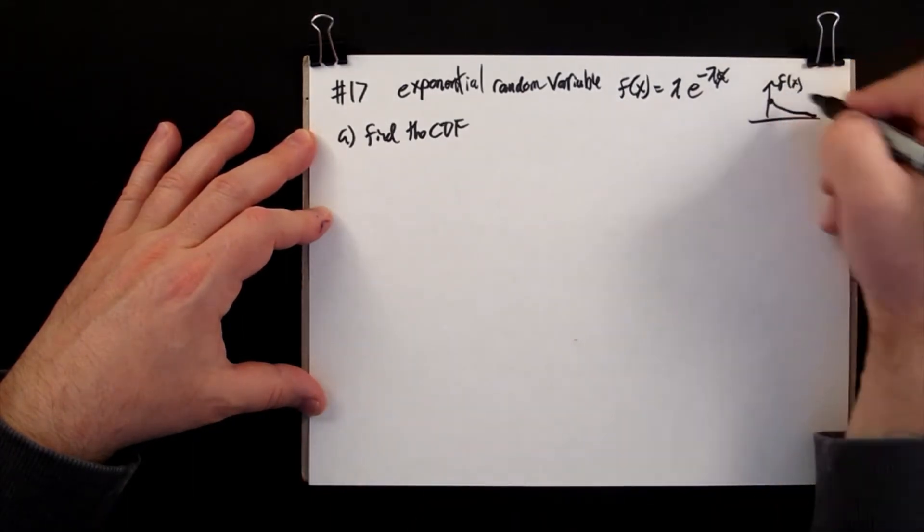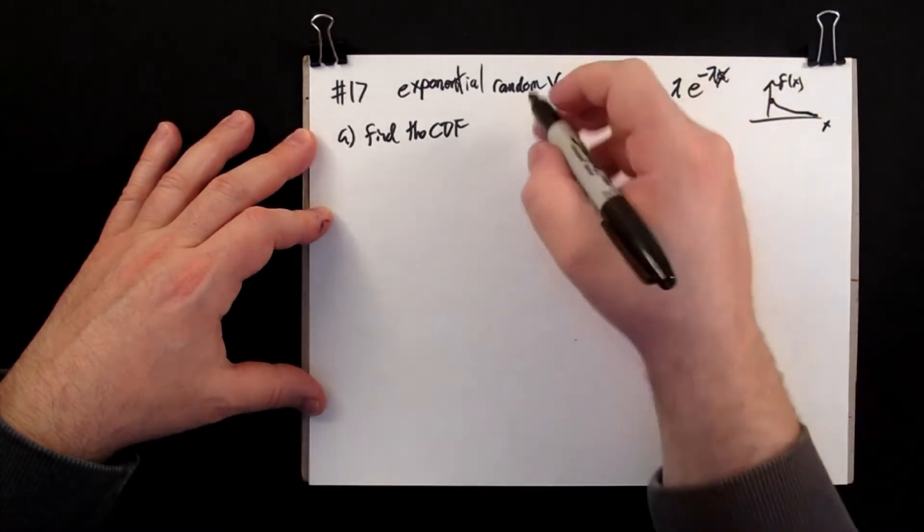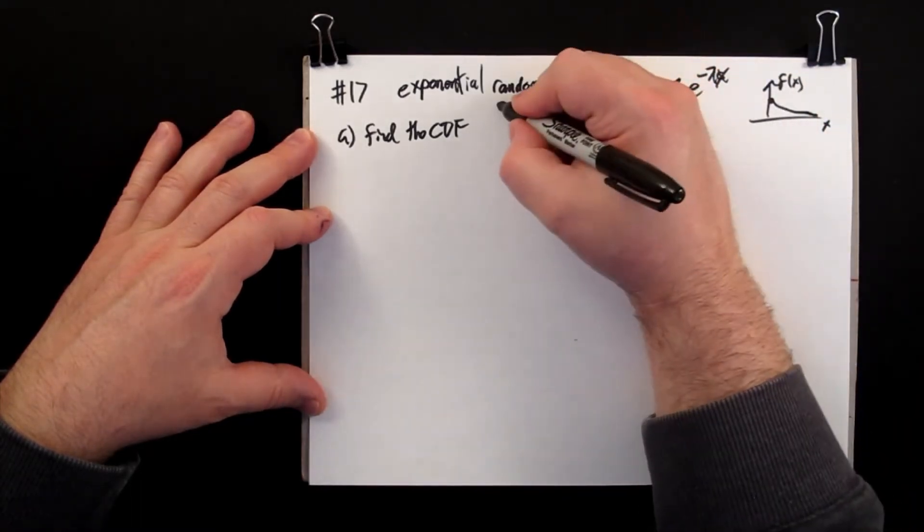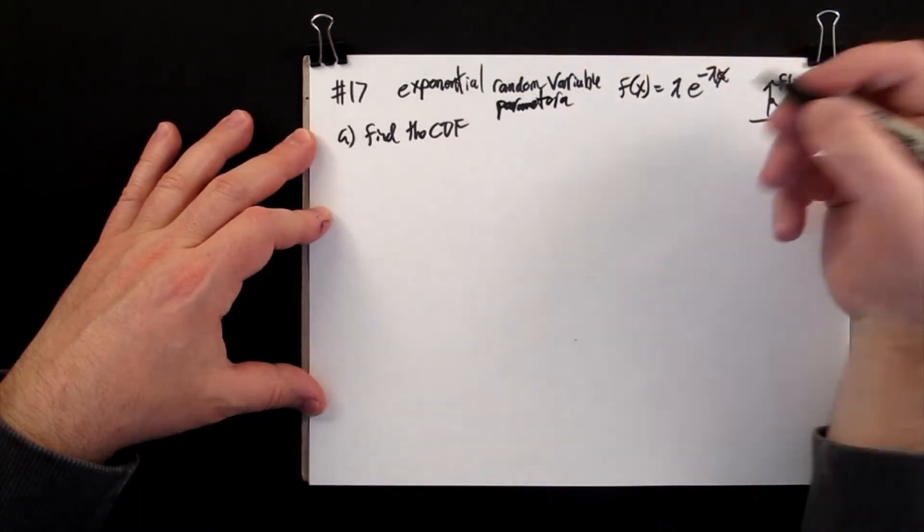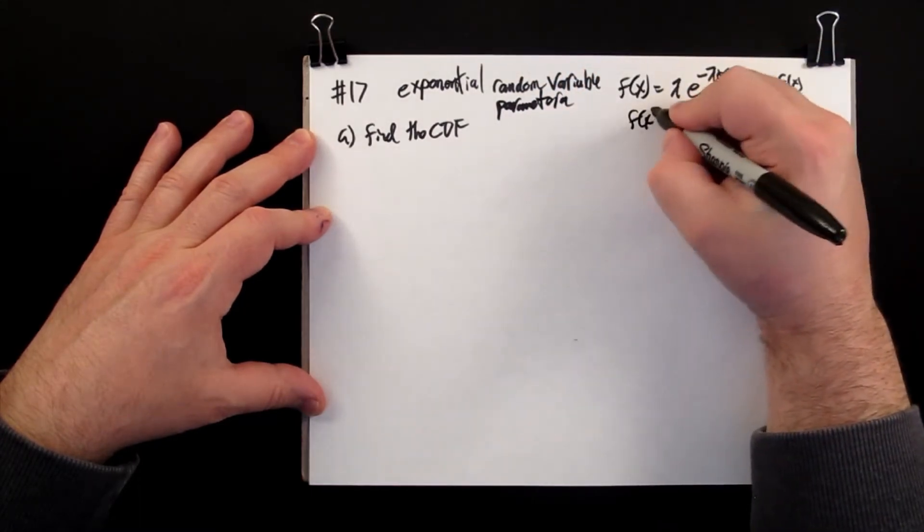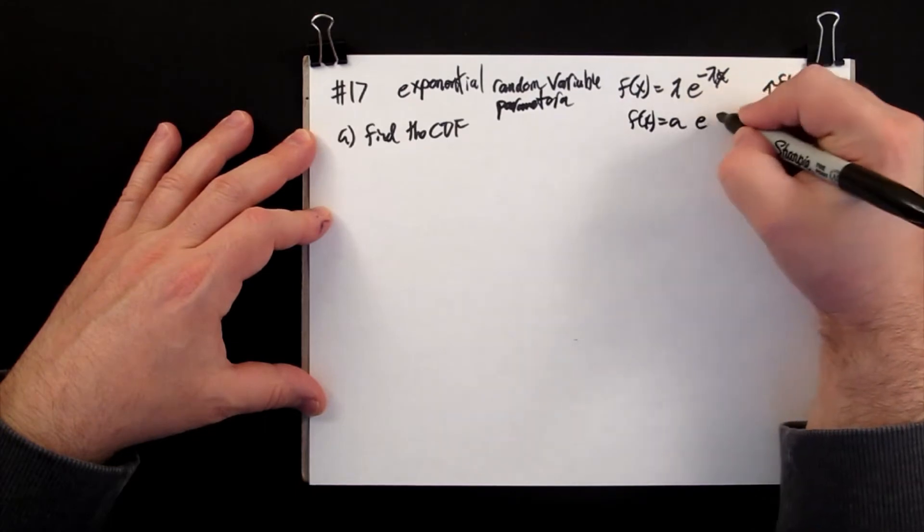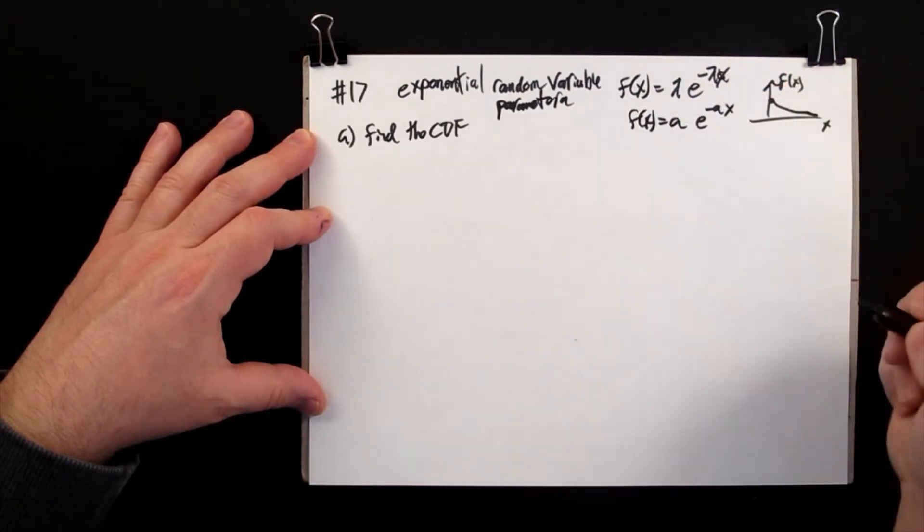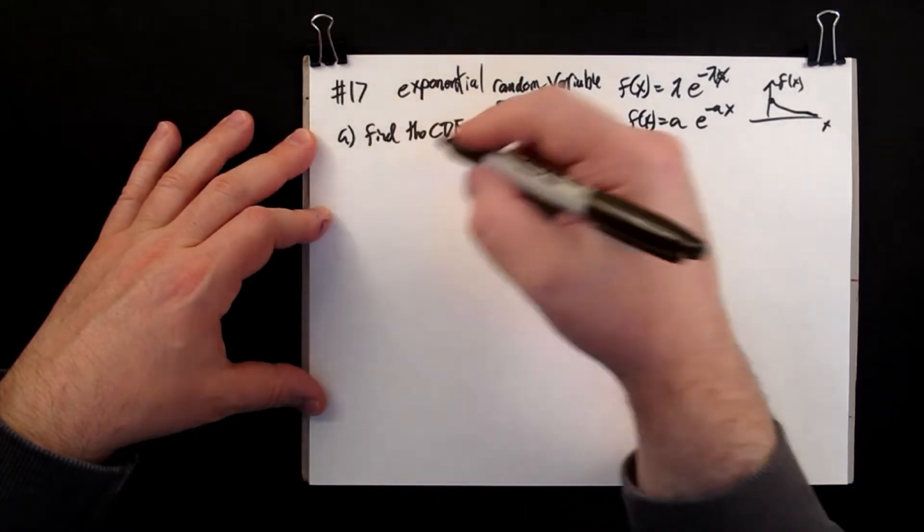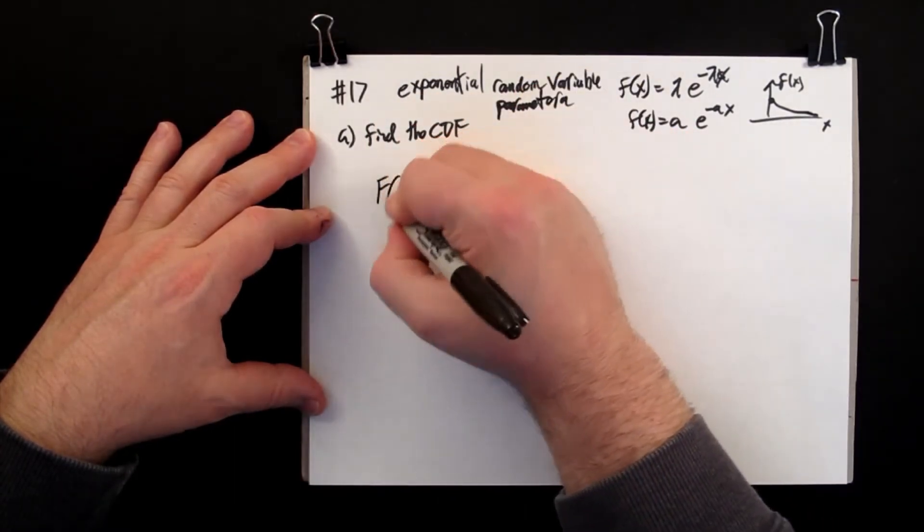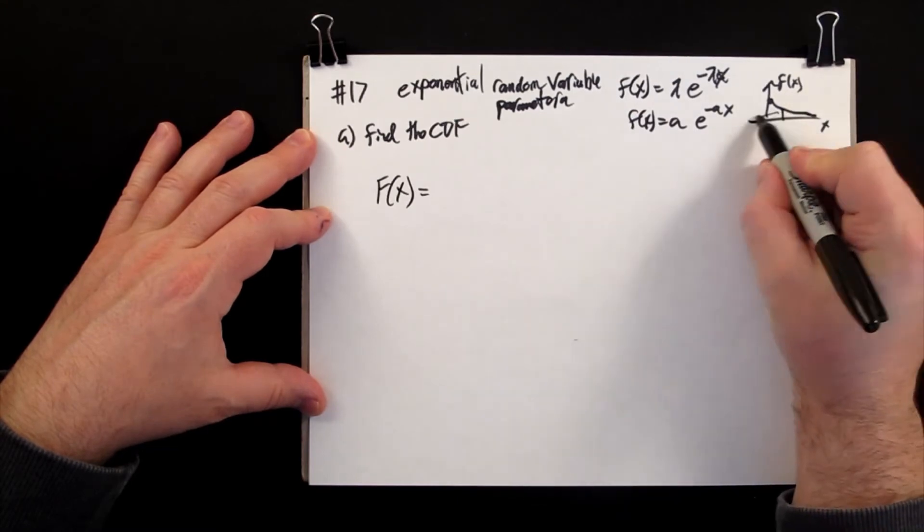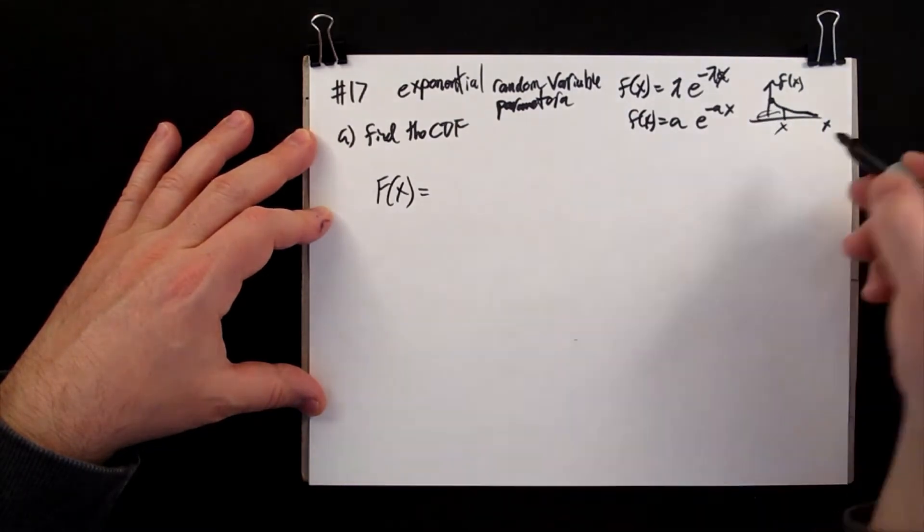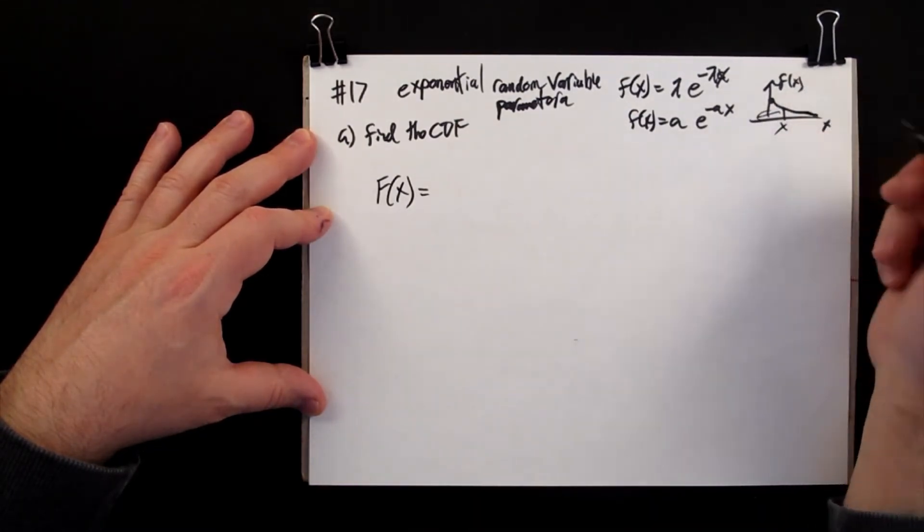Since we have parameter A, that means our specific one we're looking at is the following. The CDF answers the following question: it's a function that's going to tell you the area under the curve for everything less than some specific value on the PDF graph.